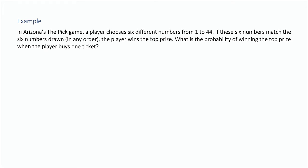In Arizona's The Pick game, a player chooses six different numbers from 1 to 44. If these six numbers match the six numbers drawn in any order, the player wins the top prize. What is the probability of winning the top prize when the player buys one ticket?